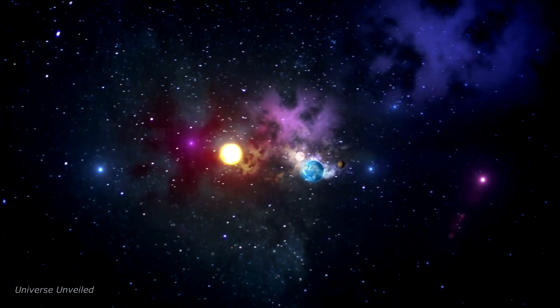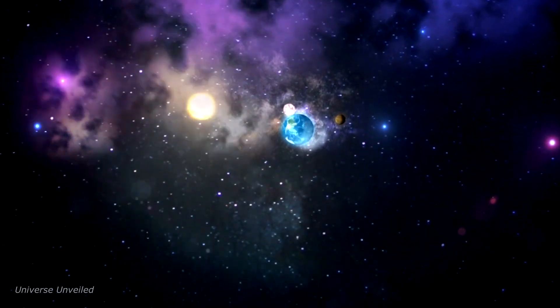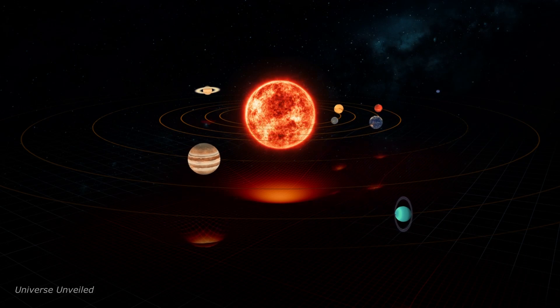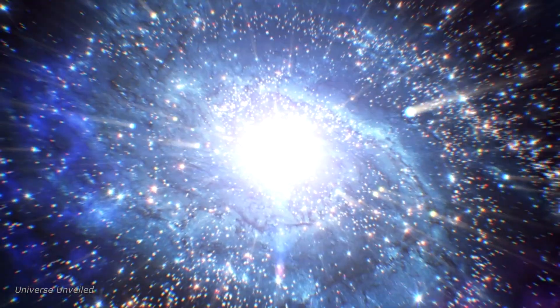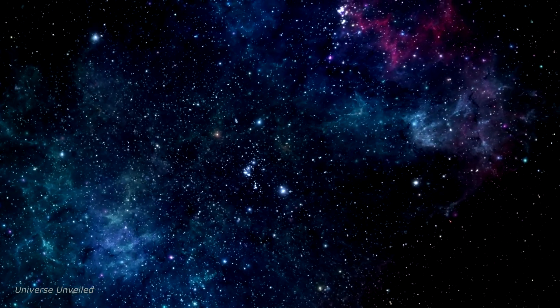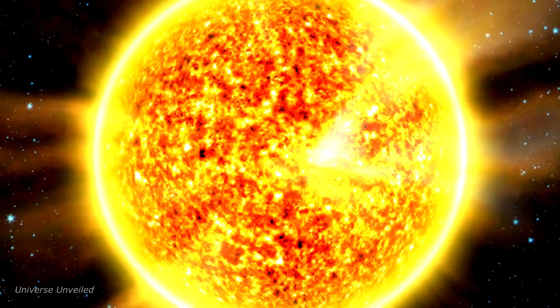Closest to the Sun, we find Mercury, a small, cratered world that experiences the most extreme temperature fluctuations in the solar system. Then comes Venus, our sister planet, shrouded in a thick, toxic atmosphere, making it the hottest planet in our solar system.